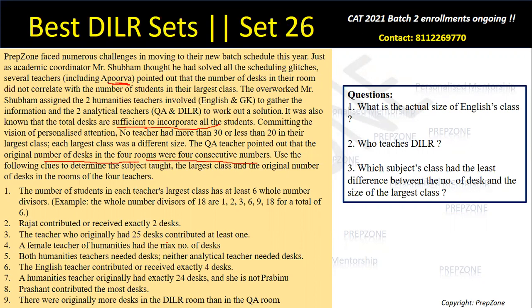Hint four: a female teacher of humanities had the maximum number of desks. So there is a female humanities teacher — either English or GK — who has the maximum number of desks.